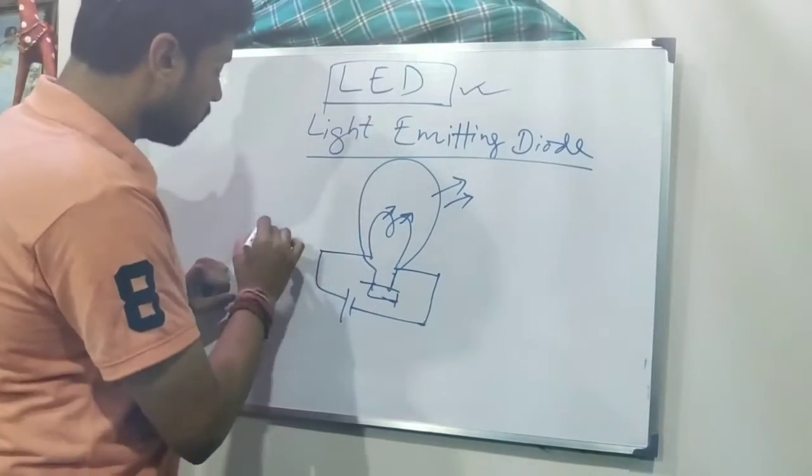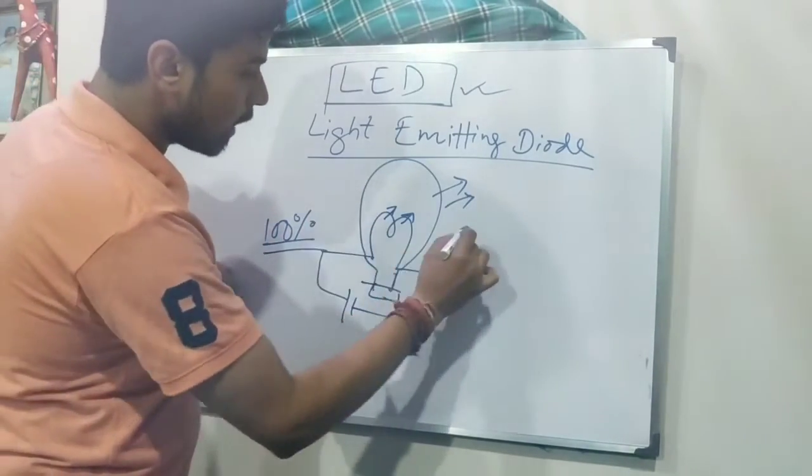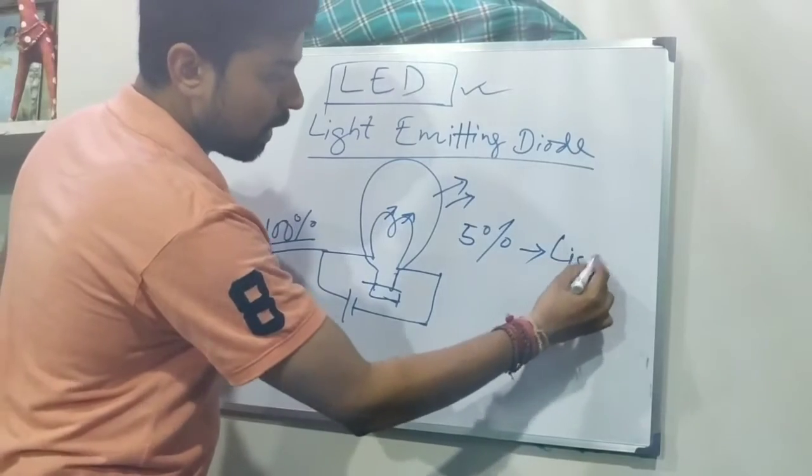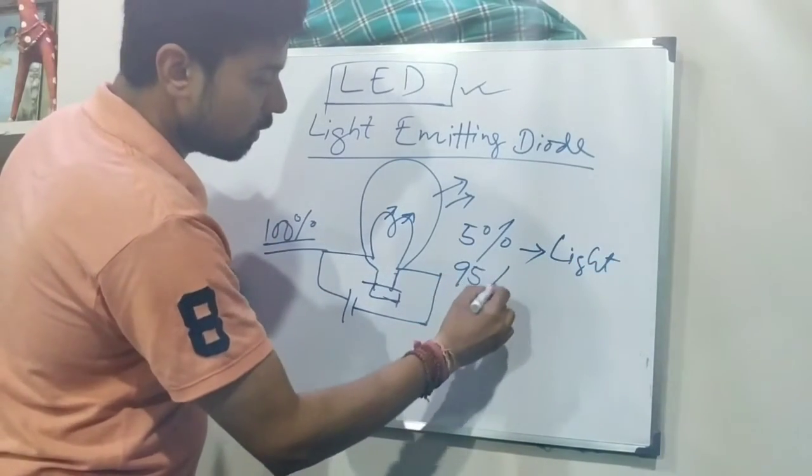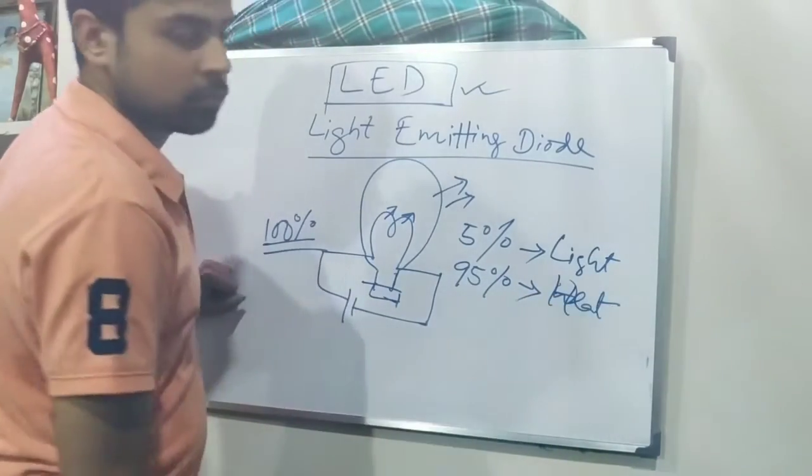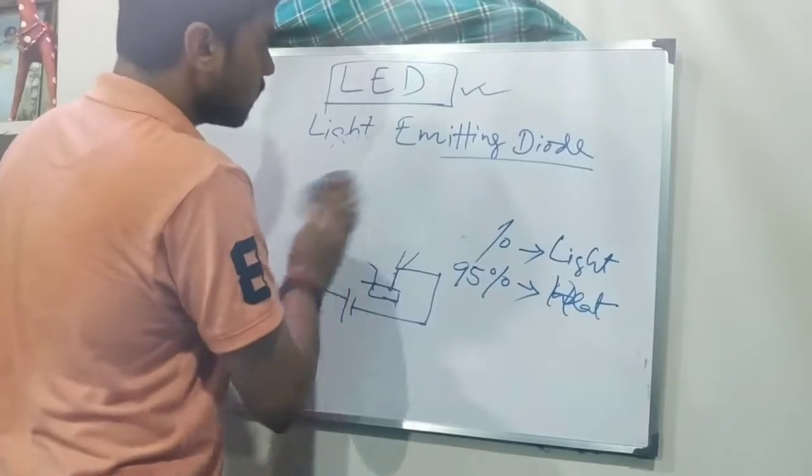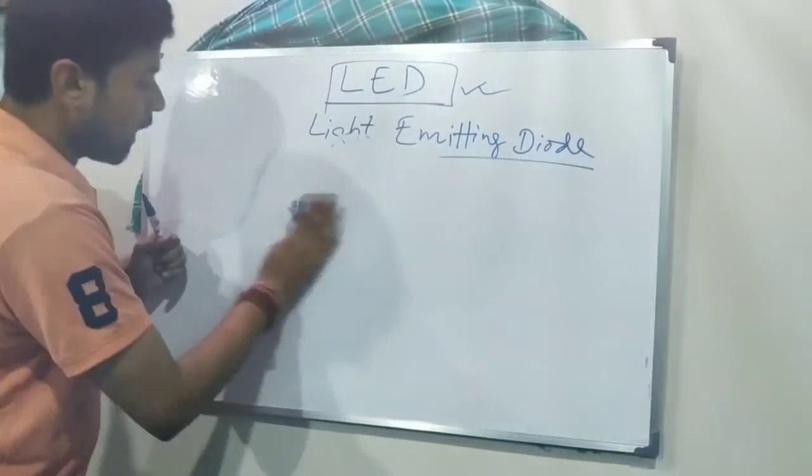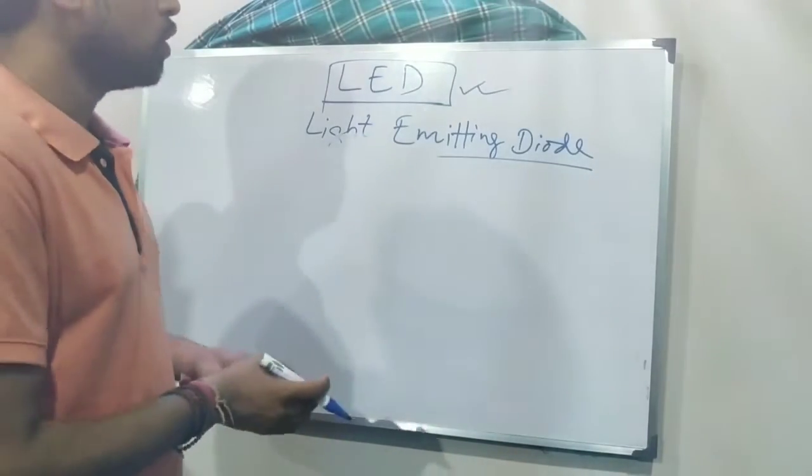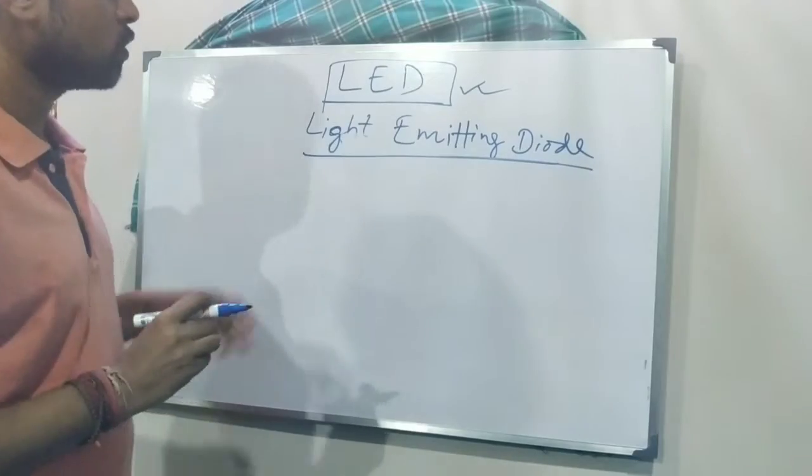Let's say the 100% energy, whatever we are providing, only 5% of this energy is getting transformed into light. And the rest, 95% is wasted in heat. So it's very much ineffective. That's why we need certain mechanism in which the efficiency is more, because here the efficiency is very low.